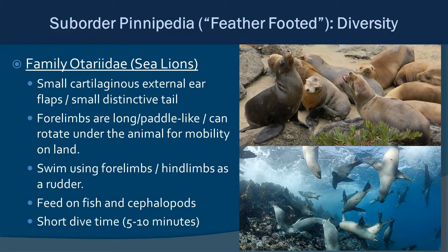Family Otariidae are the sea lions — probably the most charismatic, well-known from marine parks. They have a small cartilaginous external ear flap, a distinctive tail, and much longer paddle-like forelimbs that can rotate under them, allowing them to walk on land. Unlike seals, sea lions swim primarily with their forelimbs and use their hind limbs as rudders. They feed on fish, cephalopods, and various other prey, with dive times much shorter than seals — typically five to ten minutes.